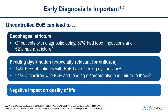An early diagnosis is important because uncontrolled eosinophilic esophagitis can lead to esophageal stricture. Of patients with diagnostic delay, 57% had food impactions and 52% had a stricture in one study. Feeding dysfunction is also common, especially in children — anywhere from 15% to 60% of patients with EOE have feeding dysfunction, and about 21% of children with EOE and feeding disorders also have associated failure to thrive. In addition, EOE has a significant impact on quality of life.